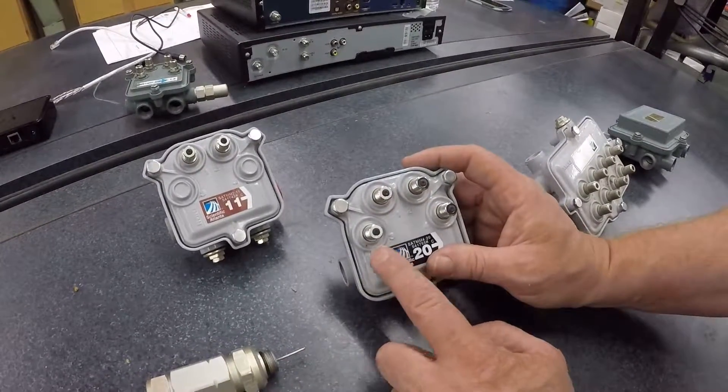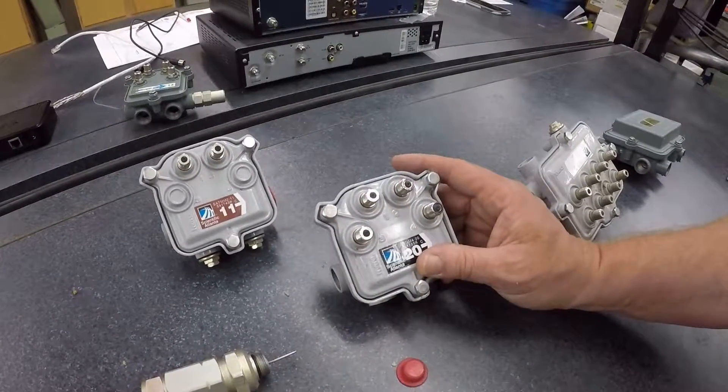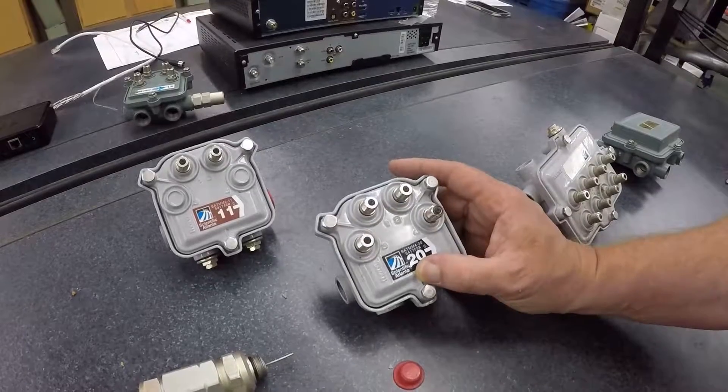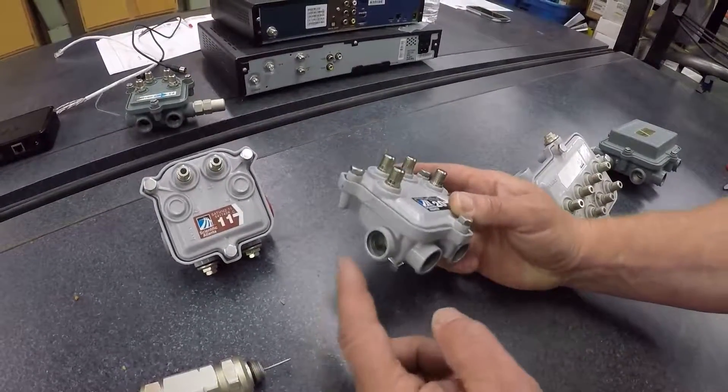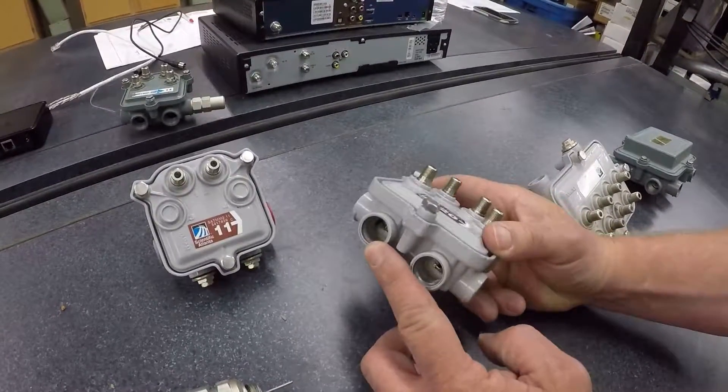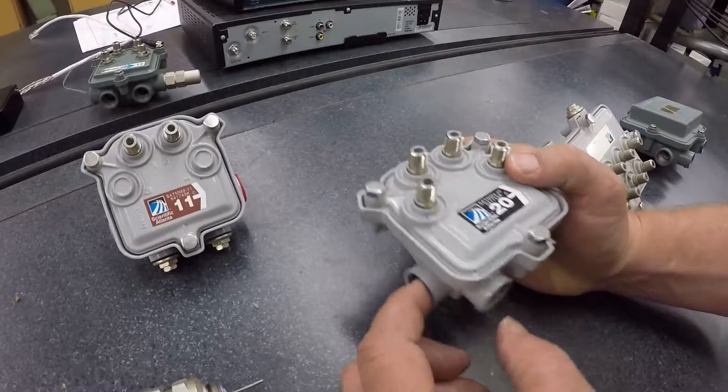This tap here is a four port tap. Once again, you have four outputs or four drop cables can come off and serve four different customers in that neighborhood. Once again, you have an in and an out and depending on how you have this configured, you can have them either way.